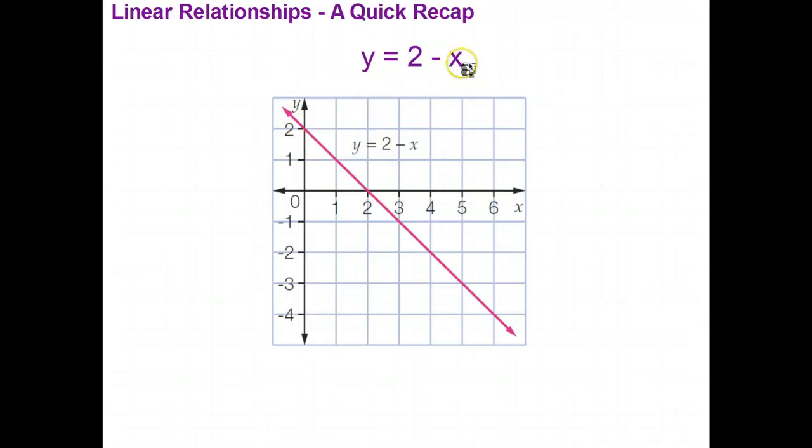x could be 1. 2 minus 1 is 1, which means when x is 1, y is 1. When x is 2, 2 minus 2 is 0. So y is 0, etc.